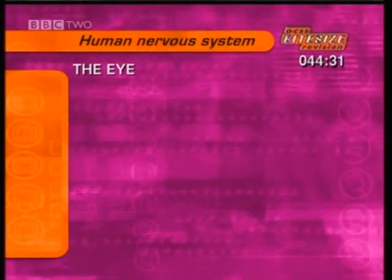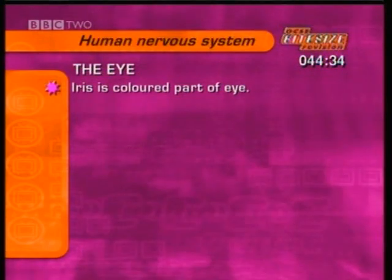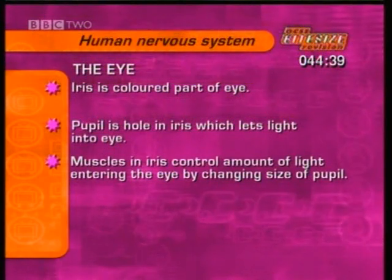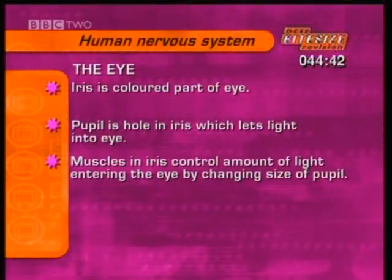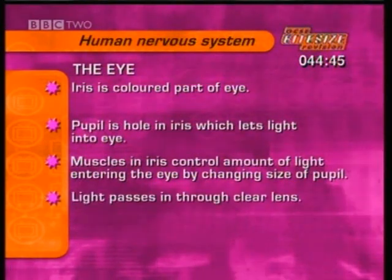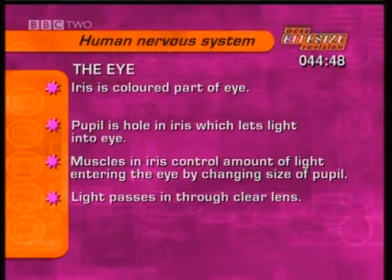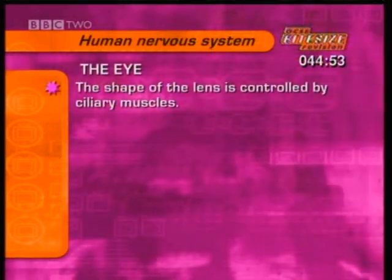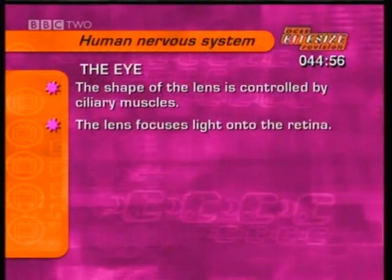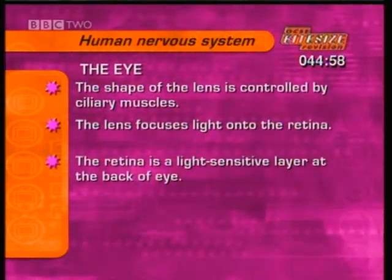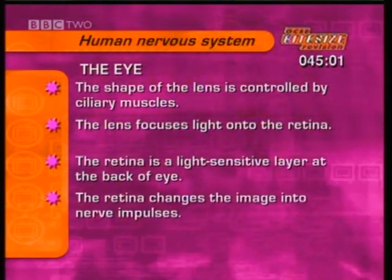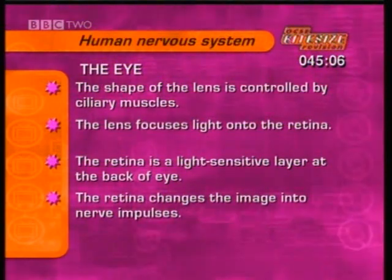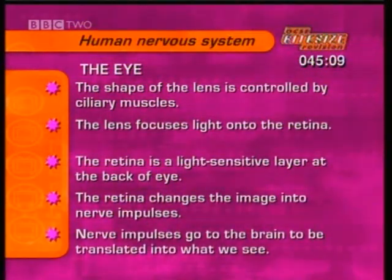Let's summarise. The iris is the coloured part of the eye. The pupil is the hole in the iris which lets light into the eye. The muscles in the iris control the amount of light entering the eye by changing the size of the pupil. Light then passes into the eye through the clear lens, whose shape is controlled by the ciliary muscles. The lens focuses light onto the retina — a light-sensitive layer lining the back of the eye — which changes the light image into nerve impulses that go to the brain to be translated into what we see.